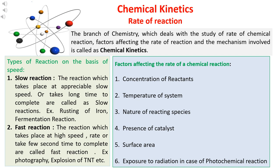While discussing the factors affecting the rate of reaction, we must keep in mind those factors which govern the rate of a chemical reaction. These factors are: concentration of reactants, temperature of the system, the nature of reactant species, presence of catalysts, the surface area of reaction, and in some cases, the exposure to radiation — especially in the case of photochemical reactions.